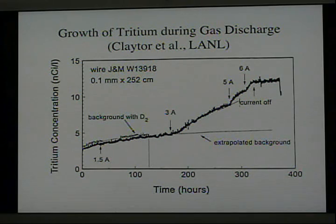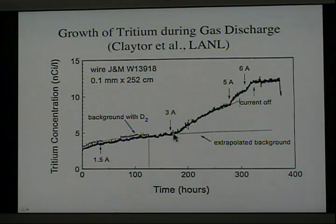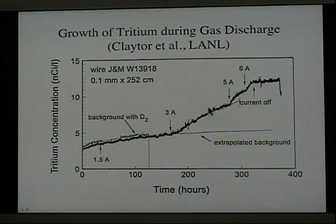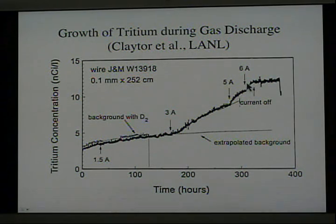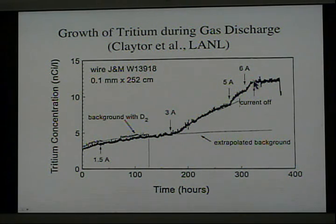For a period of time, nothing happened — no excess tritium was generated. Then when the current was increased, tritium began to accumulate. When the current was increased again, it accumulated more rapidly. Again it was increased, and the rate went up again. Finally the current was turned off, and the tritium content remained constant.